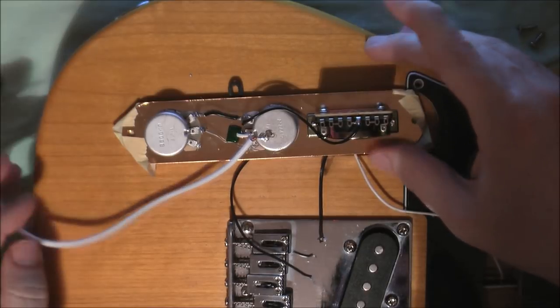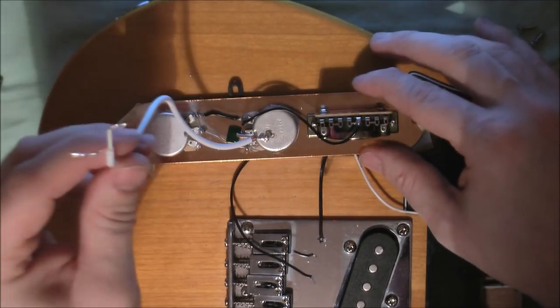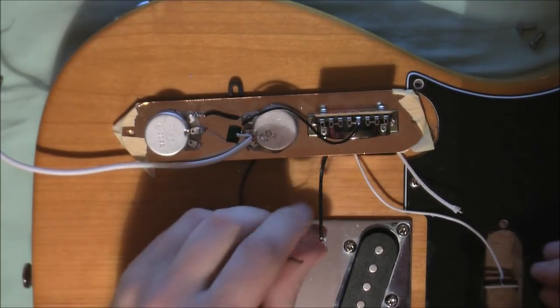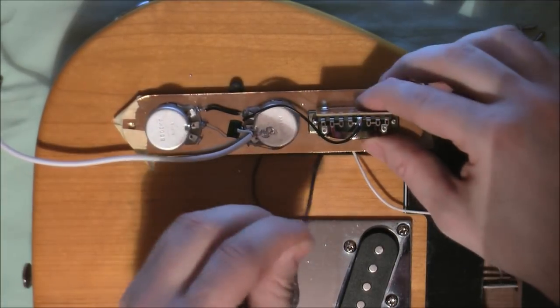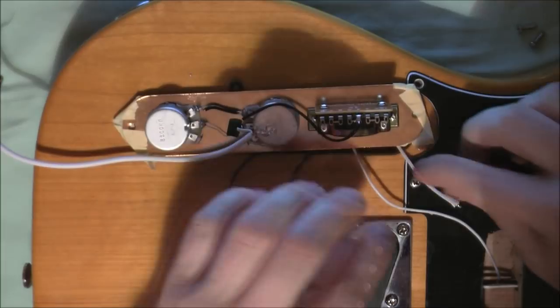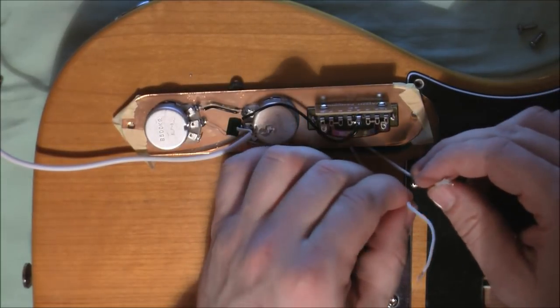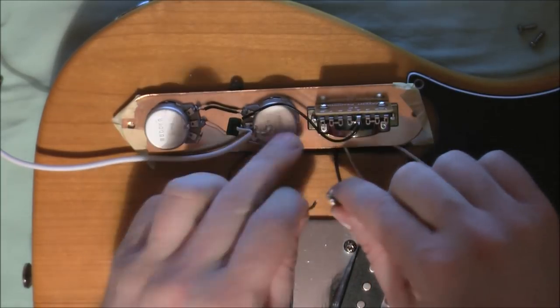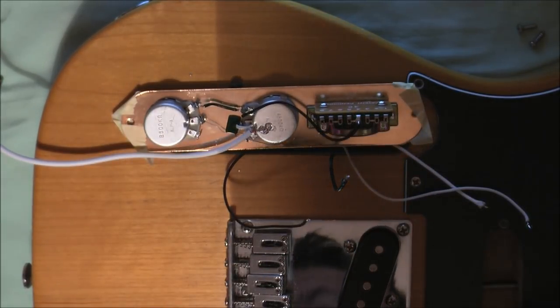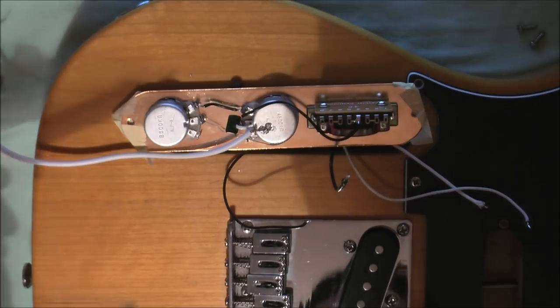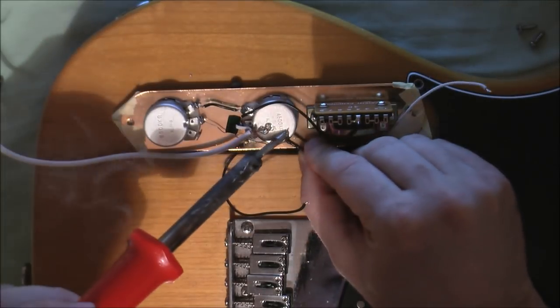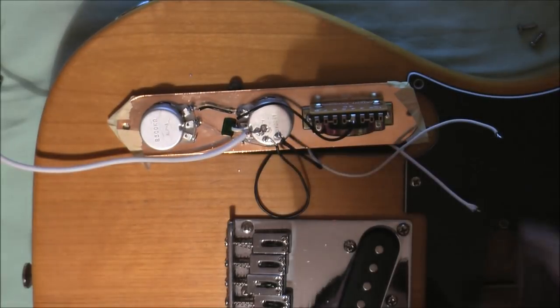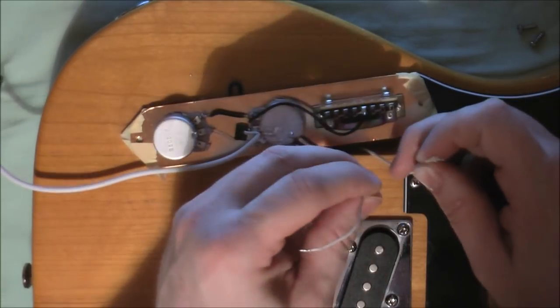Okay, so now we've got the control plate built pretty much. We've got the wire there for the output jack which we'll wire up later. We've got the two wires, the two ground wires from the neck and the bridge pickup, and the hot wires from the neck and the bridge pickup there. So the first thing I'm going to do is I'm going to solder the two ground wires to the back of the volume pot. And these are my two hot wires.